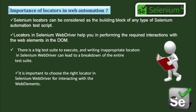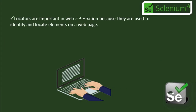Writing XPath every time is not a good idea — there are other locators we can use. Locators are important in web automation because they are used to identify and locate web elements on a web page. If you cannot locate the right web element, you cannot perform automation testing, and you will keep getting 'no such element' or 'element not found' exceptions, and your script will not execute properly.